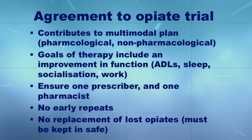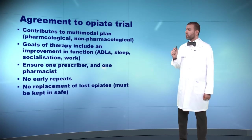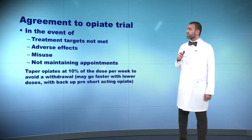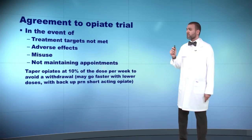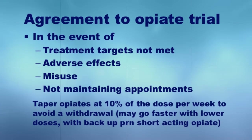Ensure one prescriber and one pharmacist — you should not allow the patient to shop around. No early repeats whatsoever, no replacement of lost opiates. In the event that treatment targets are not met, or there is misuse or side effects, or the patient is not maintaining appointments, taper opioids by 10% per week to avoid withdrawal and try to discontinue as quickly as possible.